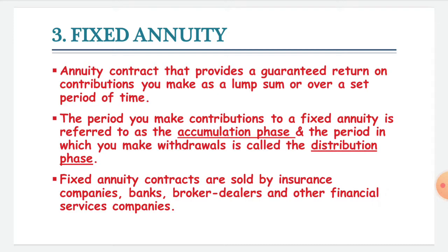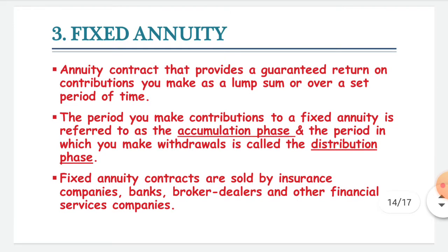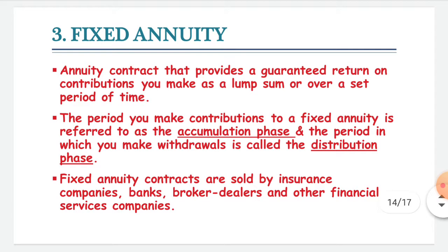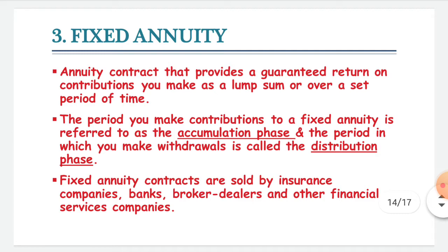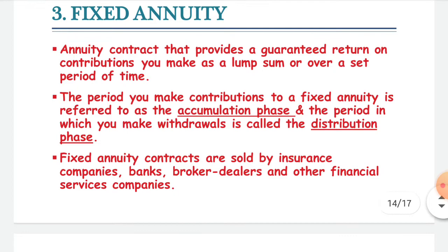Fixed annuity is an annuity contract that provides a guaranteed return on contributions you have made, which may be in lump sum or paid periodically in installments. The period you make contributions to the annuity is the accumulation phase and the period in which you start getting the returns is the distribution phase. Fixed annuity contracts are sold by insurance companies, banks, or other financial services companies.